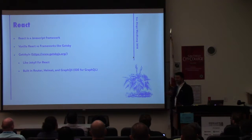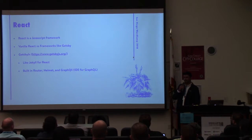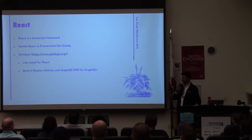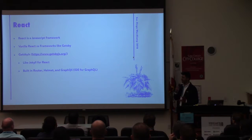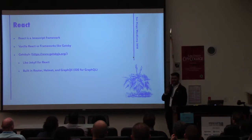Gatsby handles a lot of things like routing. WordPress has routing built-in, so you can do a lot of dynamic linking versus hard-coded linking. It also has Helmet, which is kind of like WP underscore head. And it has support for GraphQL.